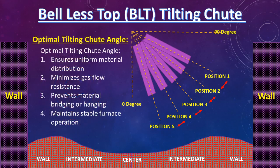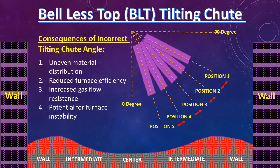The importance of optimal tilting shoot angle: it ensures uniform material distribution, minimizes gas flow resistance, prevents material bridging or hanging, and maintains stable furnace operation. The consequences of an incorrect tilting shoot angle include uneven material distribution, reduced furnace efficiency, increased gas flow resistance, and potential for furnace instability.